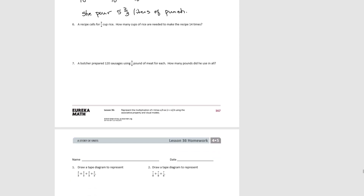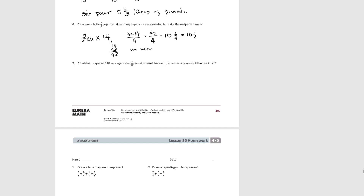For number 6, a recipe calls for 3/4 of a cup of rice, and how many cups are needed to make the recipe 14 times? We do 3 times 14 over 4. 14 times 3 is 42, so 42/4. We can make 10 wholes — 10 times 4 uses 40/4 — with 2/4 left over, which we know is 10 and 1/2. We would need 10 and 1/2 cups of rice. Always include the units.